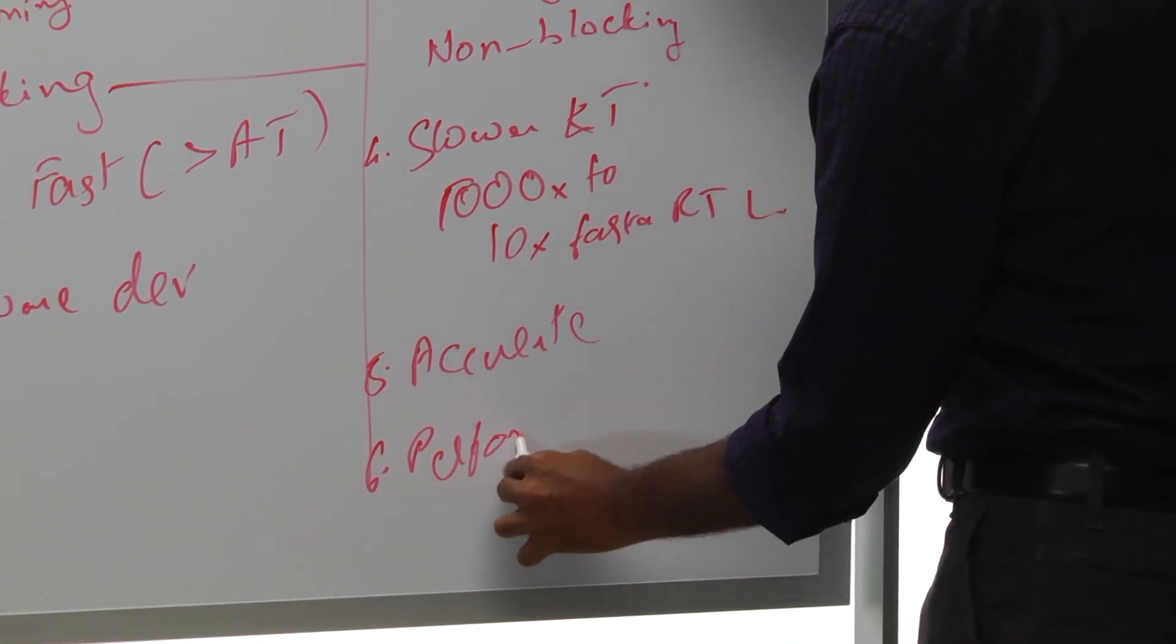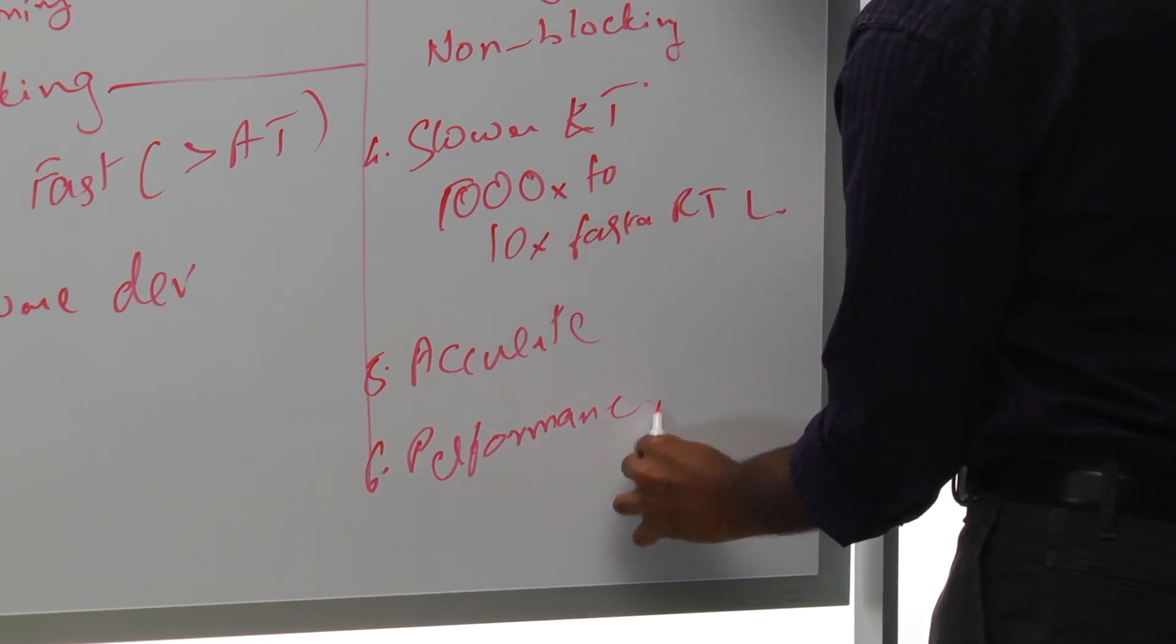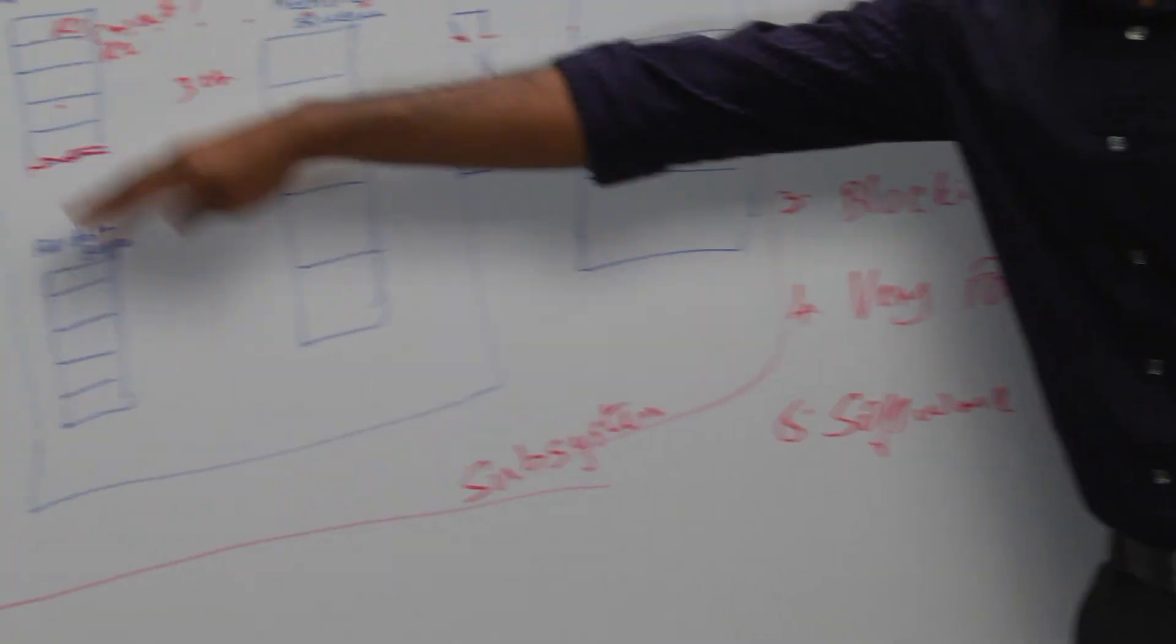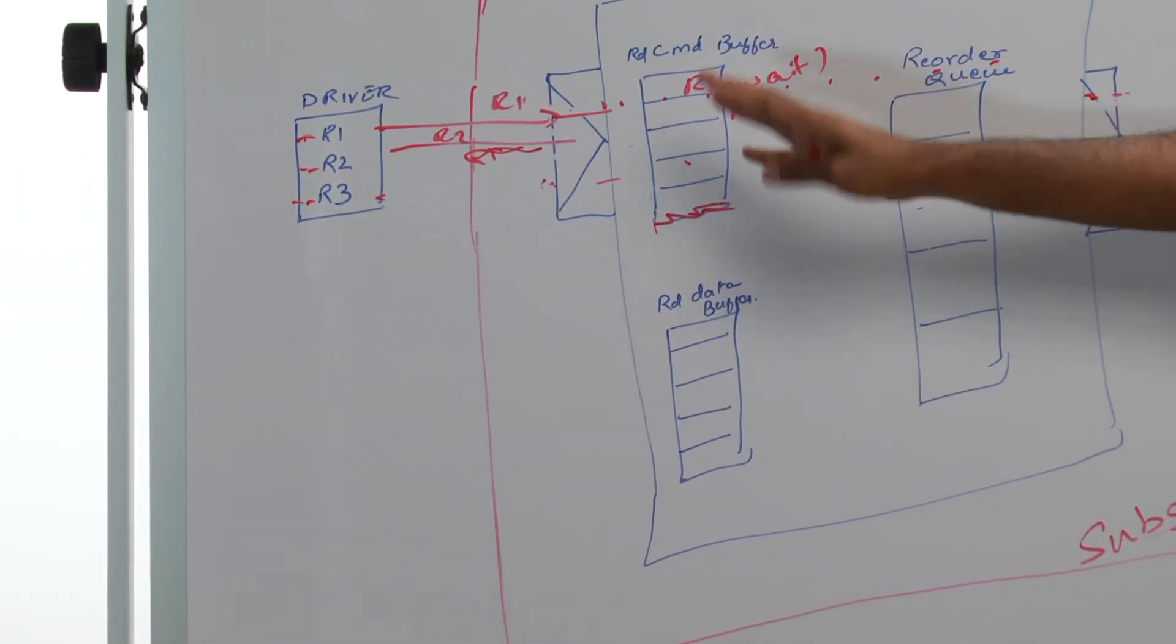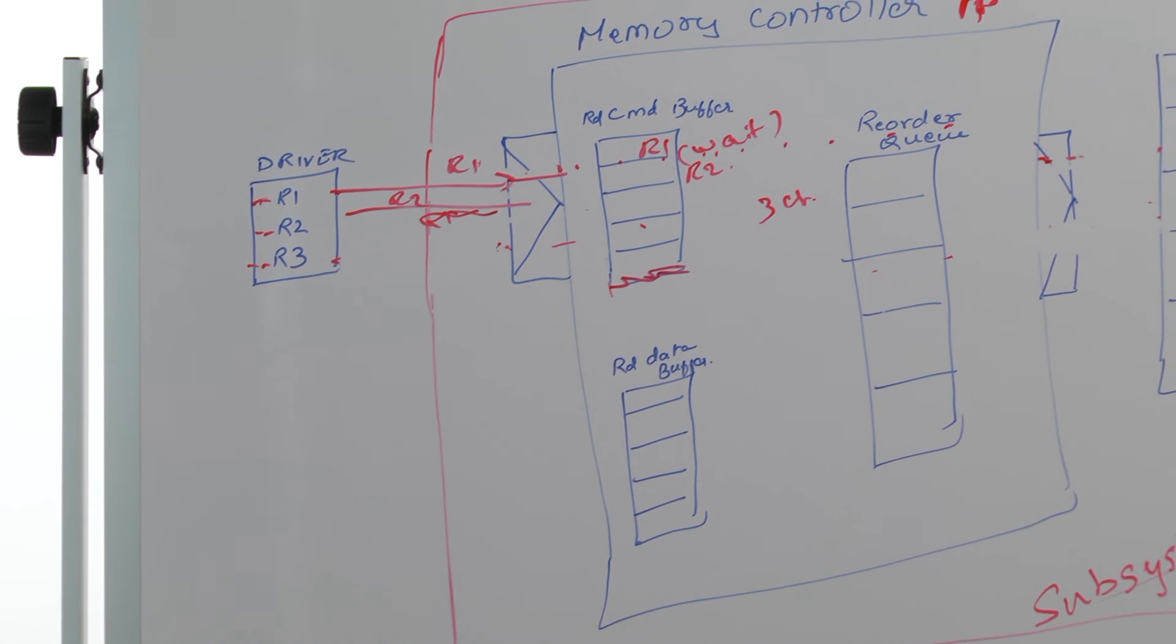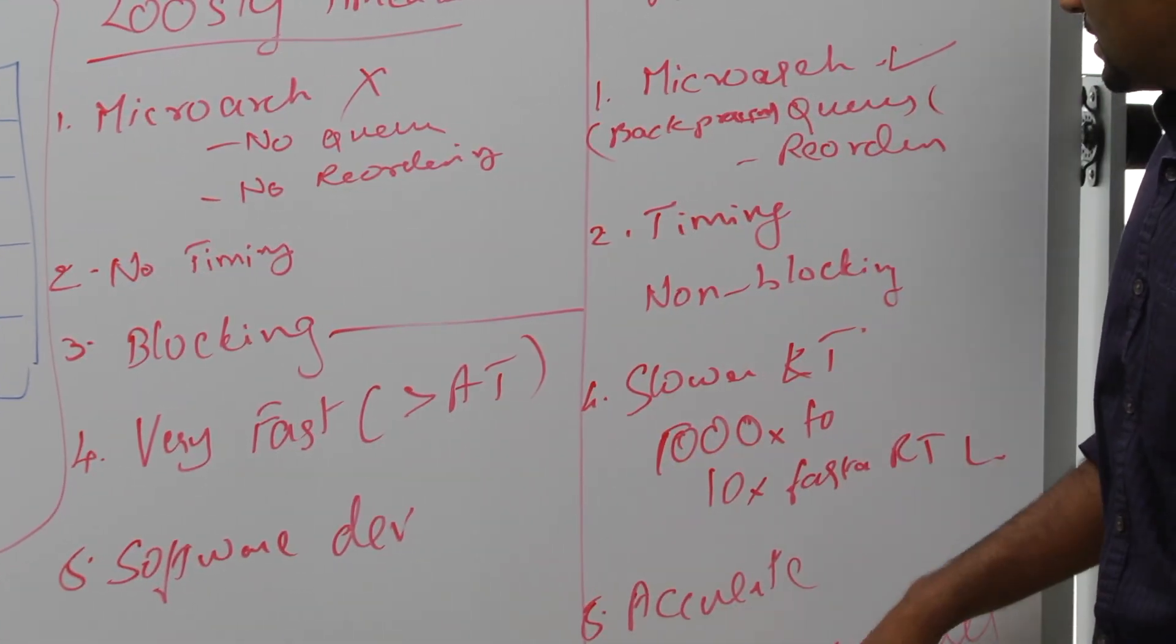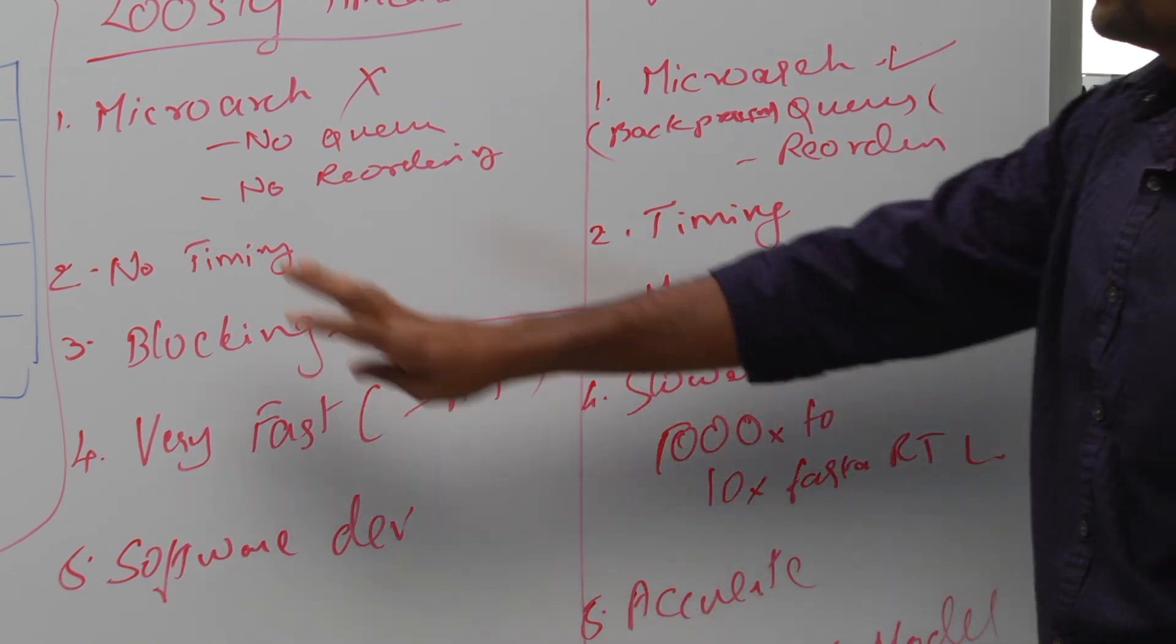It's typically used as a performance model. That's the application for this. It can be used for architectural exploration - you can change the command queue, play with it, change different sizes of buffers, change the profiles, and quickly run an experiment thousand times faster than RTL.